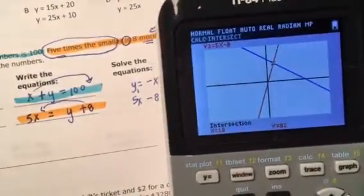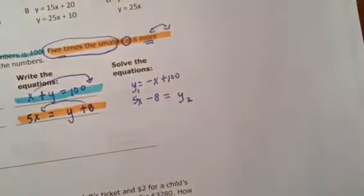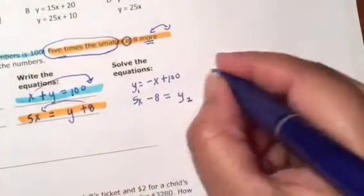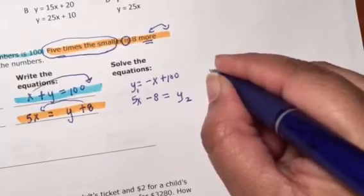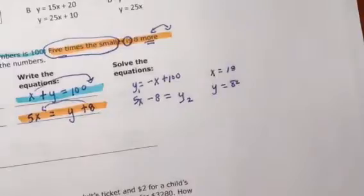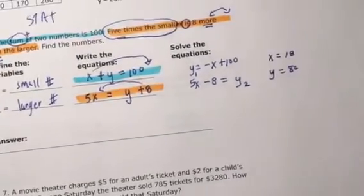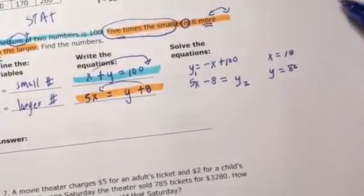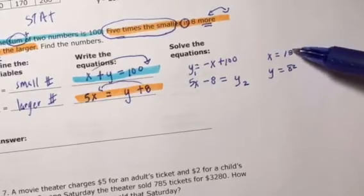So the intersection is 18 and 82. So X is 18, Y is 82. Now if I add those two numbers, I get 100.